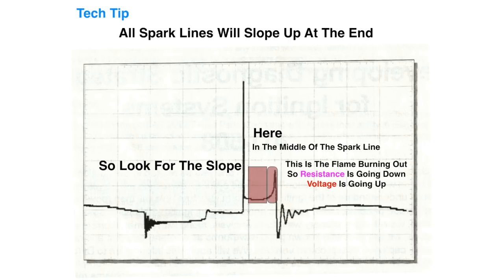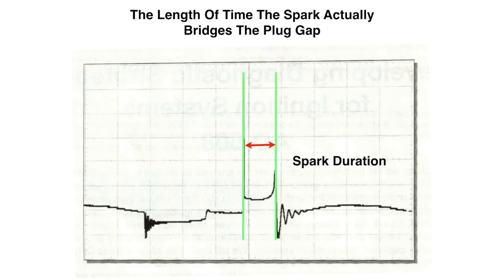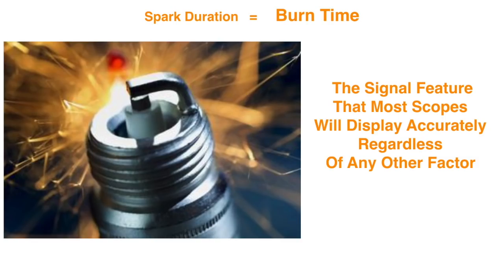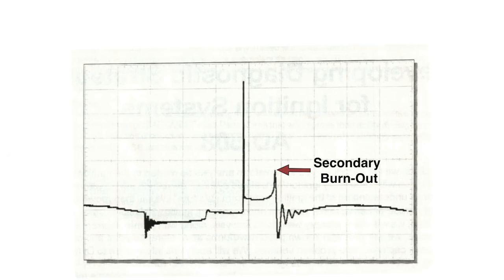The next part is your spark duration — the length of time the spark actually bridges the gap. The primary function of the ignition system is to maintain spark for as long as there are available hydrocarbons present in order to achieve a complete and controlled, efficient burn. That's called spark duration, also referred to as burn time. The single feature that most scopes will display accurately, regardless of any other factor, is the burn time — usually one to two milliseconds in duration.